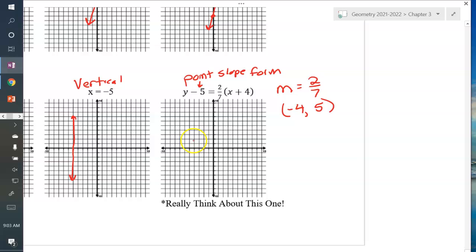So 1, 2, 3, 4. 1, 2, 3, 4, 5. And then use my slope 2 7ths. I'm going to go up by 2. And then over 7. 1, 2, 3, 4, 5, 6, 7. There's that second point. And then I can just draw my line.